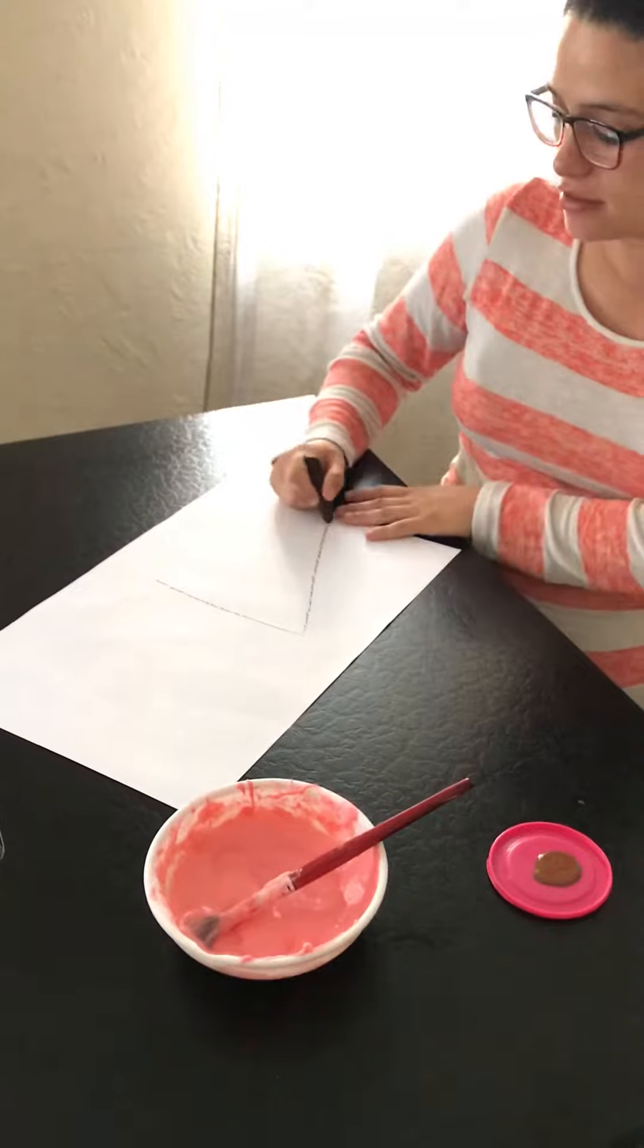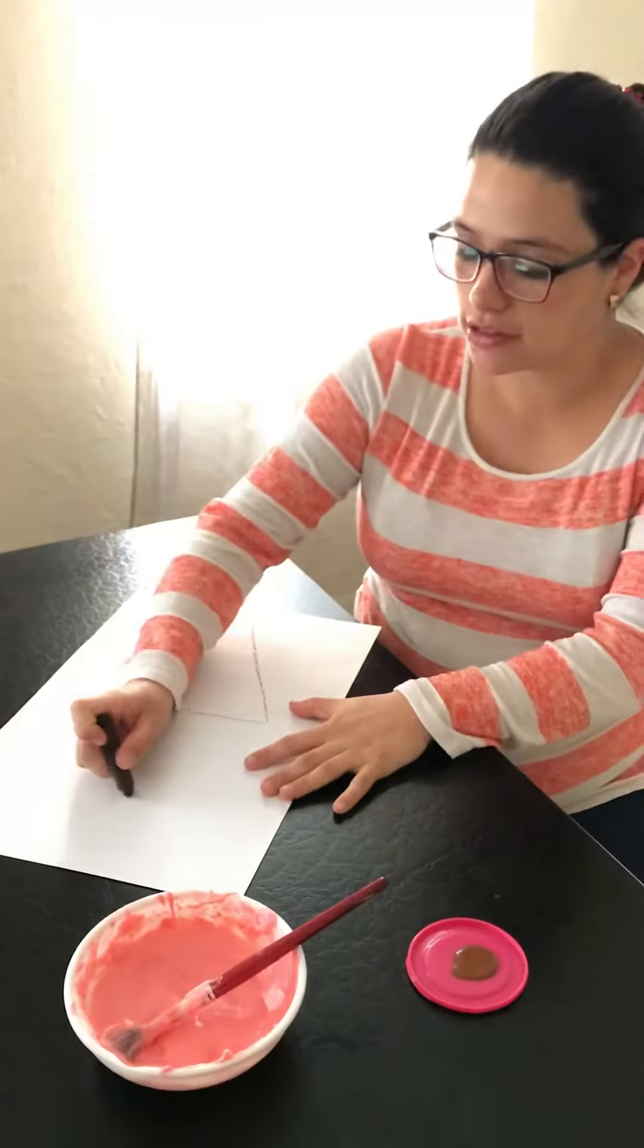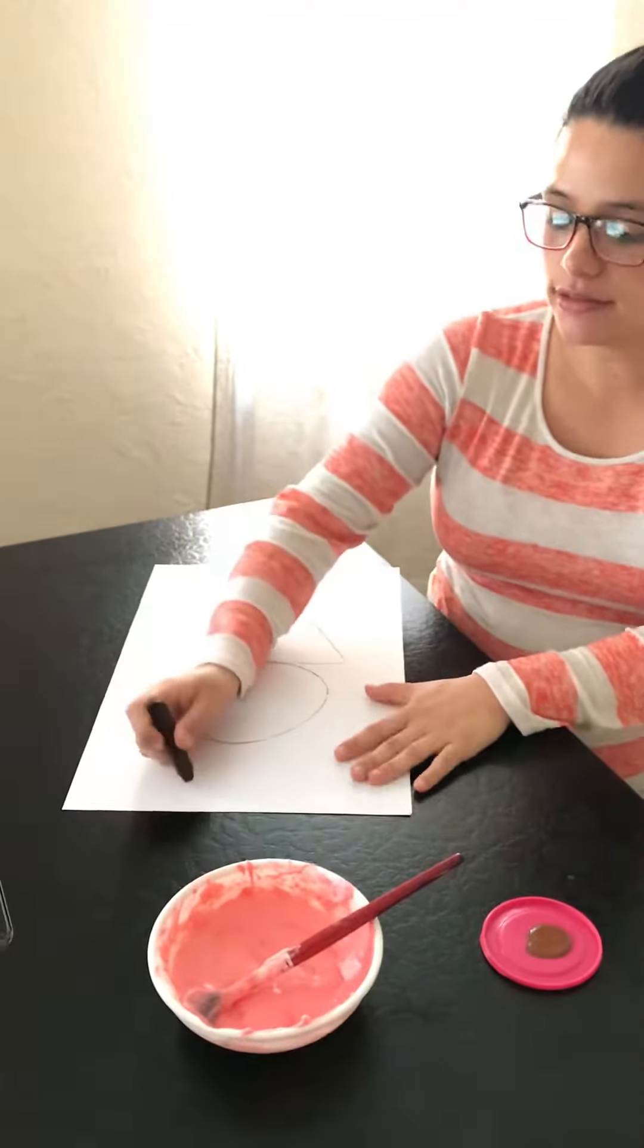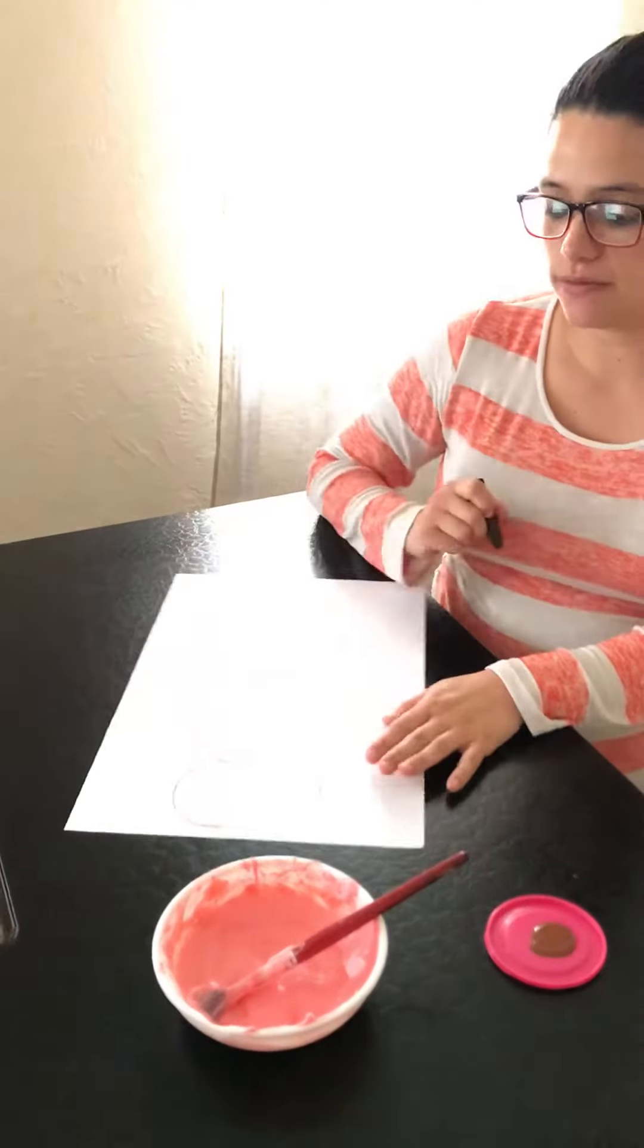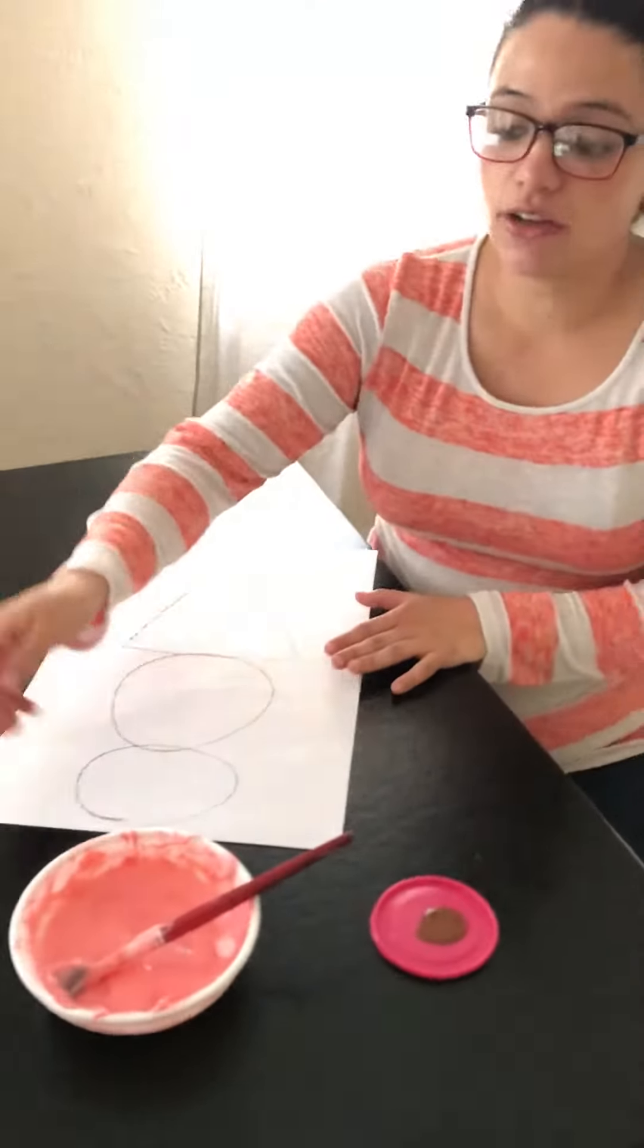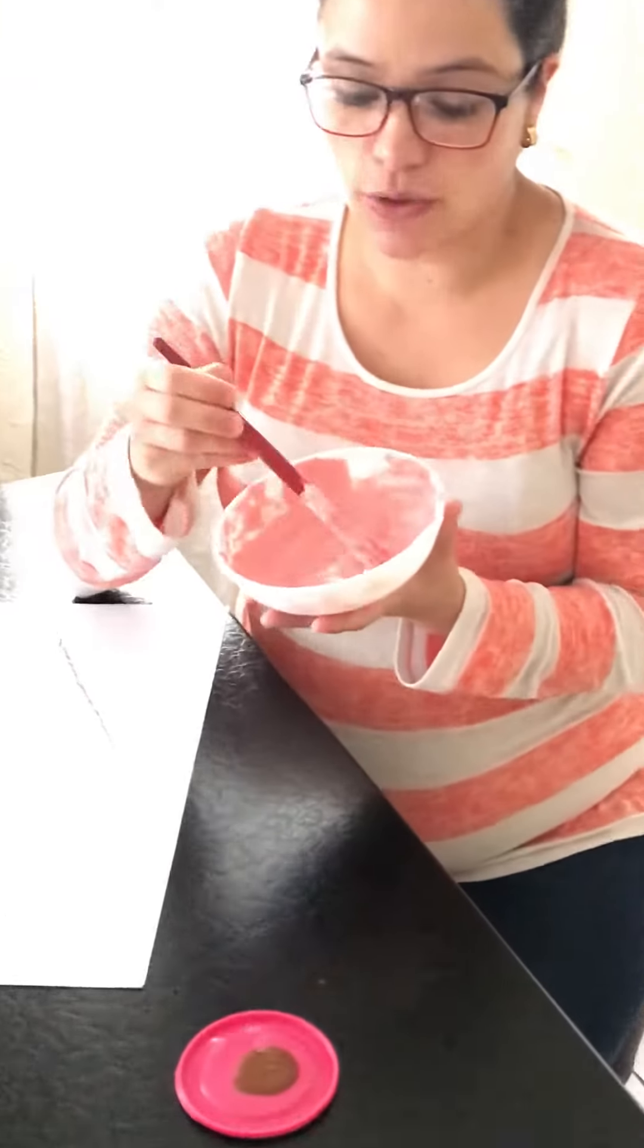We're gonna make a triangle and two circles, one and two. For that, you need your fluffy paint. I'm gonna do it red, but it's kind of pink, right?